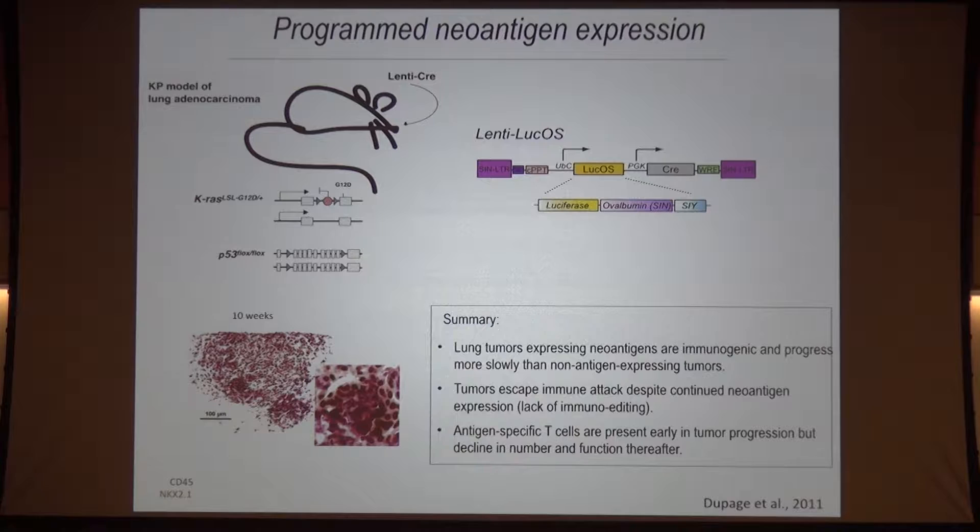This work was published about five years ago. What Dupage found was that, indeed, when you provide antigens for the immune system to see in a naturally arising tumor, the immune system sees it. In contrast to before, we now see CD45-positive cells — both B cells and T cells — infiltrating into the tumor proper. So it's not a problem with the immune system getting into a tumor like this; it just needs something to see.